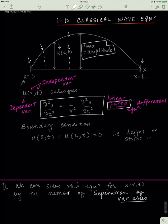Some important things to understand: this is a partial differential equation. What that means is u depends on x and t. Here, u is only differentiated with respect to x, and here it's only differentiated with respect to t. So it's a partial differential equation because u depends on both x and t, but each derivative term only involves one variable. To signify this is a partial differential equation, we use this special-looking d symbol. Whenever you see that, it means u depends on more variables than what appears in that particular derivative. We don't really like dealing with partial differential equations, so somehow we have to convert this into an ordinary differential equation.